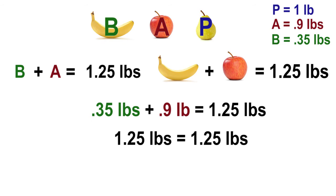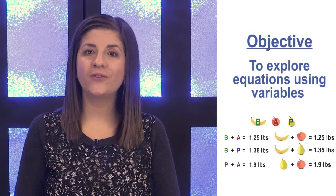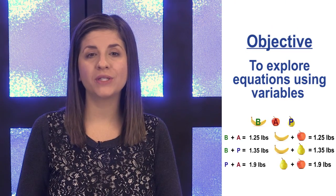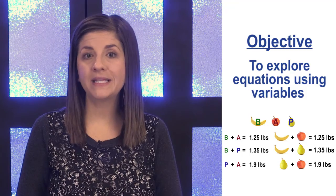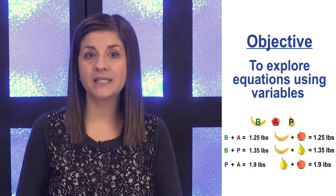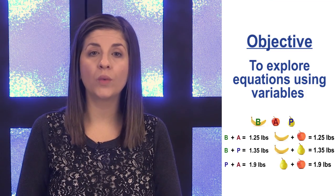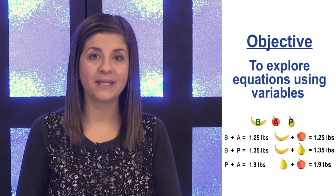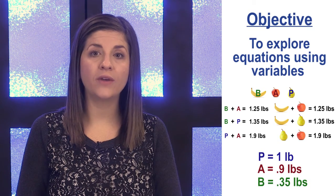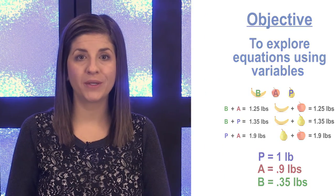This means the banana equals 35 hundredths of a pound, the pear equals 1 pound, and the apple equals 9 tenths of a pound. The objective for this lesson was to explore equations using variables. We met this objective by assigning variables for images in real-world equations and found the value for each variable to make the equations true.